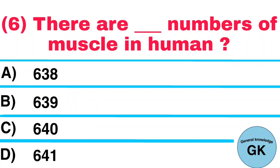Question number 6. There are numbers of muscle in human. A. 638. B. 639. C. 640. D. 641.